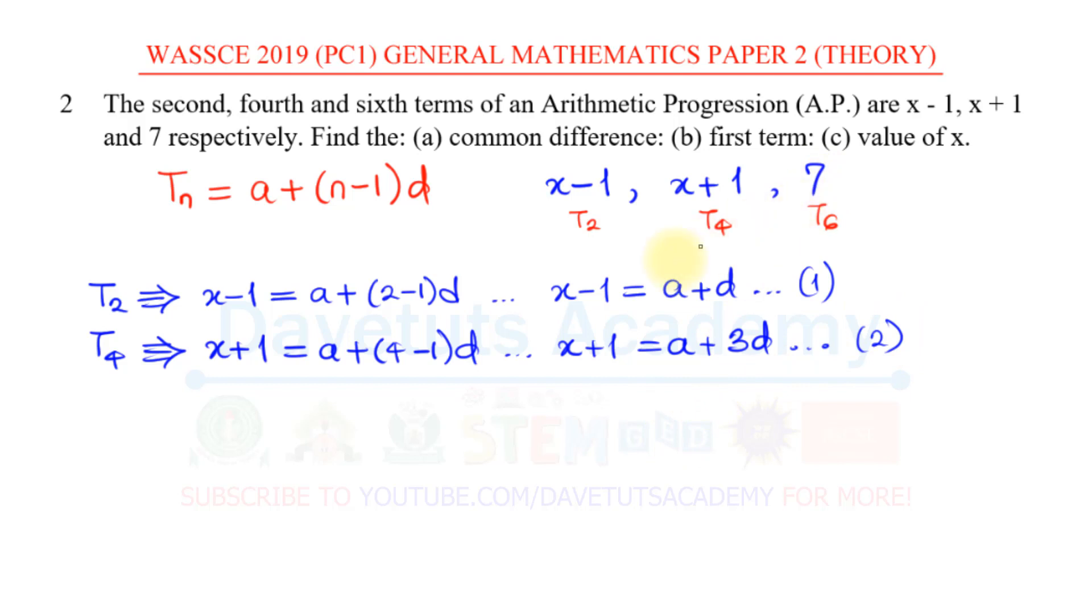And then looking at the 6th term, that is T6, that was given to be 7, so that 7 is equal to a + n here is 6-1 multiplied by the common difference. In this case I'm going to have 7 = a + 6-1 is 5, so I have 5d, and this is equation 3.